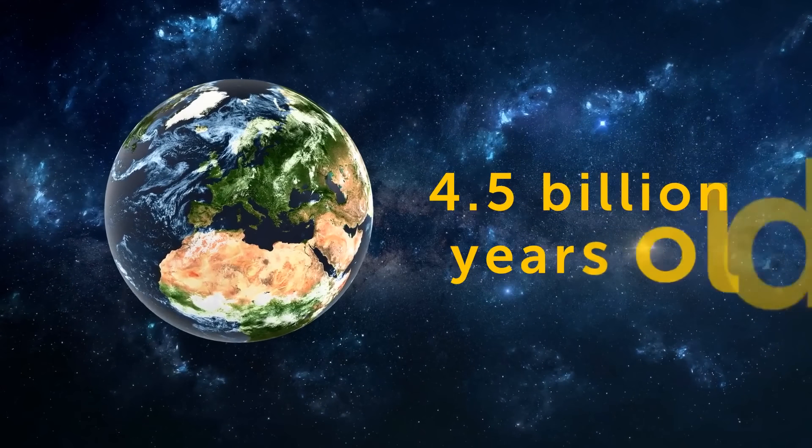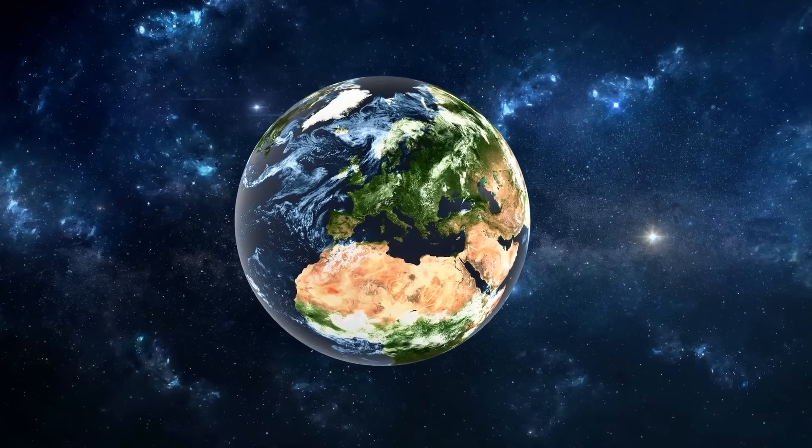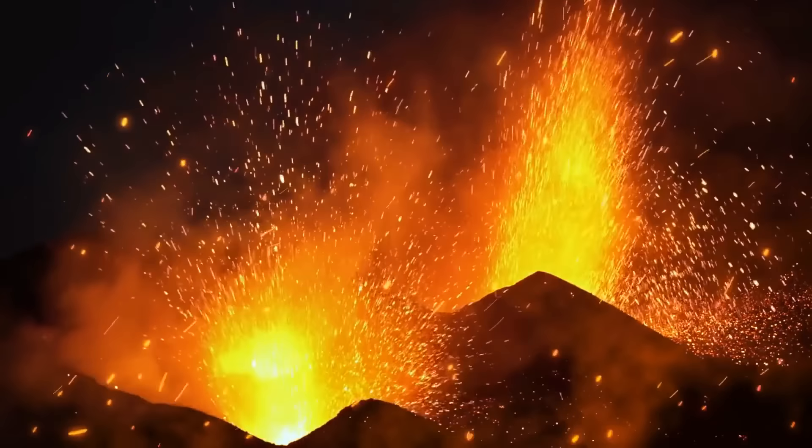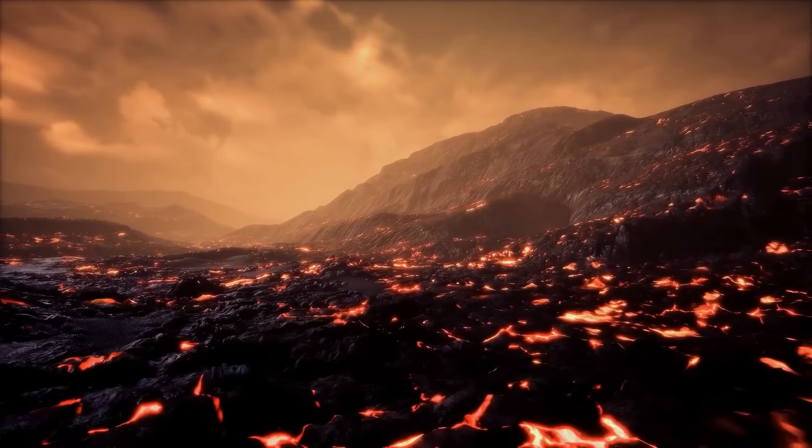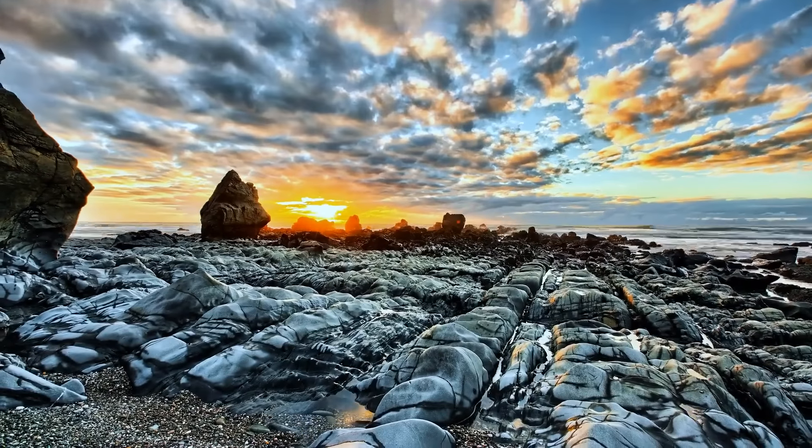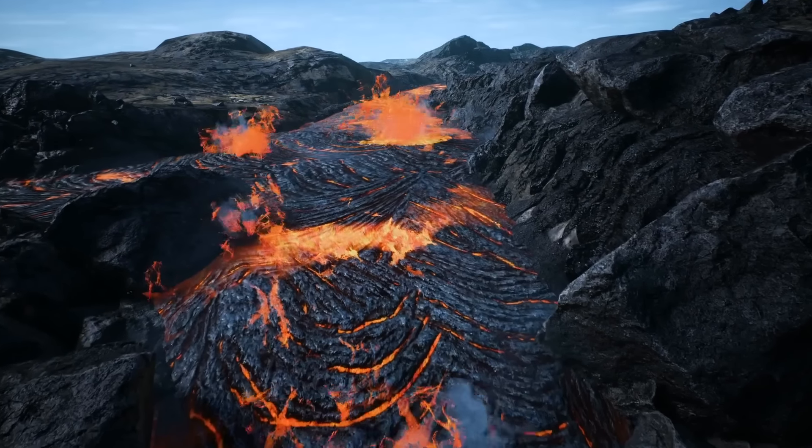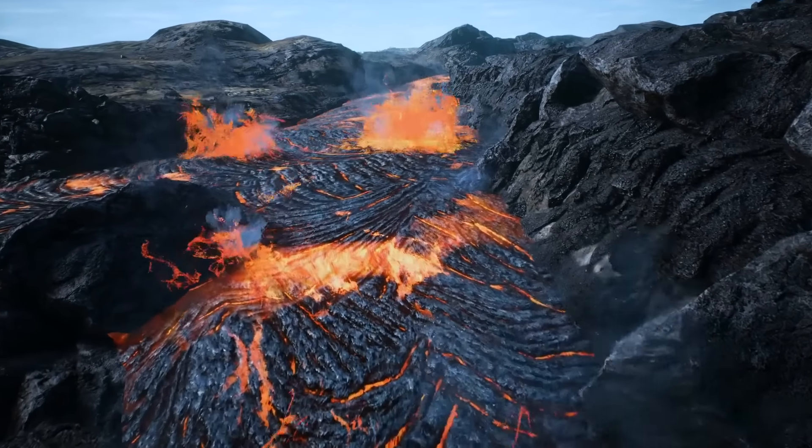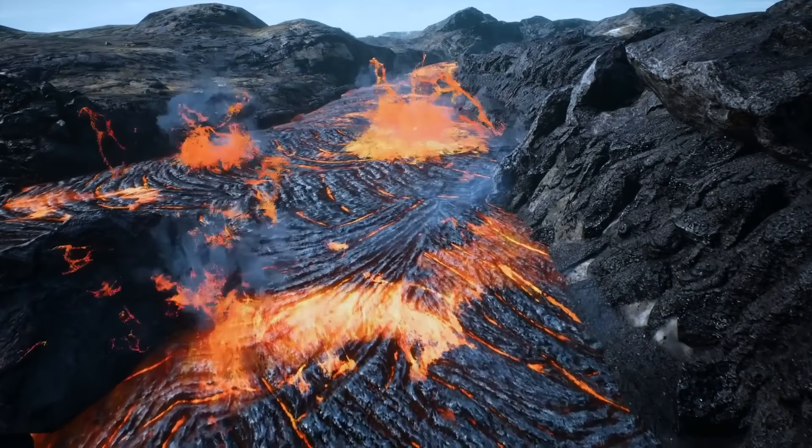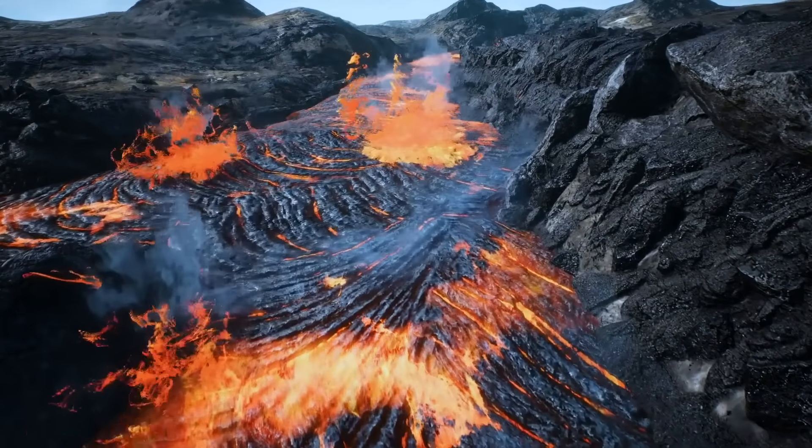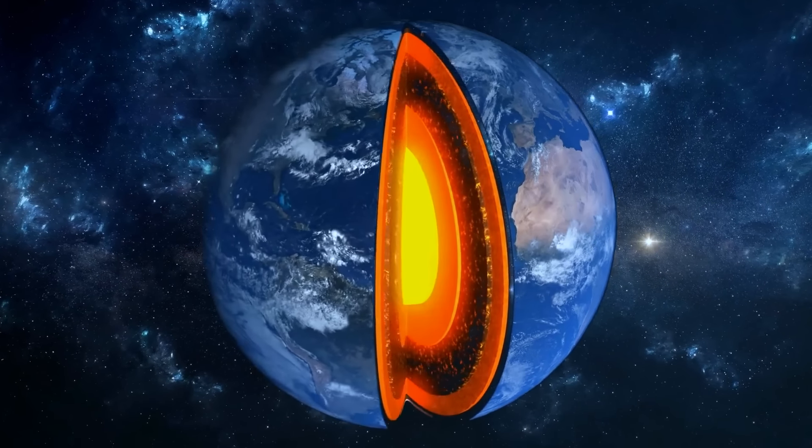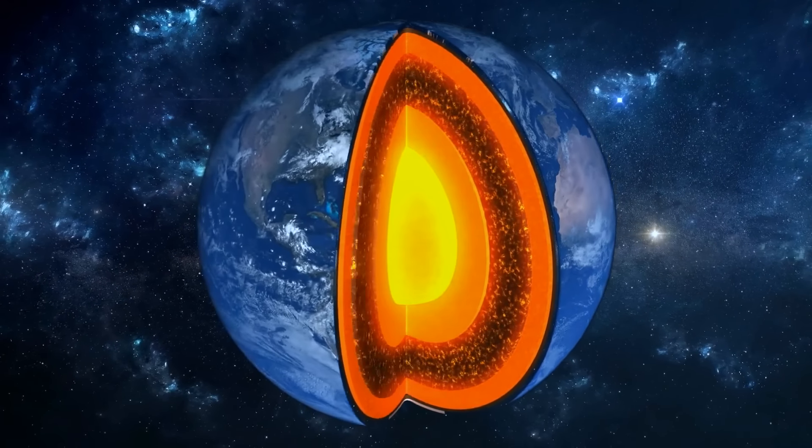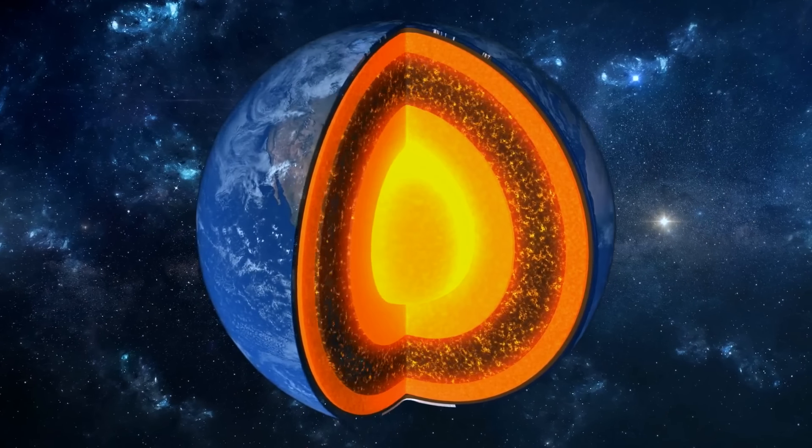Earth is about 4.5 billion years old, and when it formed, it looked very different from now. It was an extremely hot world, drowning in molten magma. Then, over the course of a few hundred million years, the planet began to cool. That's when the oceans filled with liquid water appeared on its surface. Heavy elements, initially floating on the surface of this bizarre Earth, started sinking past the oceans and magma toward the center of the planet. Earth became layered.